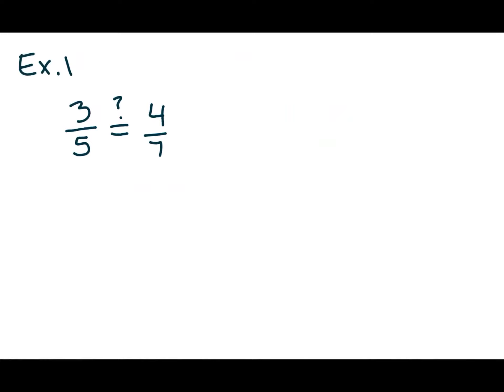Alright, let's look at example 1. The example says, is 3 fifths and 4 sevenths equivalent fractions? Well, we're going to check by cross multiplying. So we're going to check 3 times 7 and we're going to check 4 times 5 to see if they are equal. 4 times 5 is 20, and 3 times 7 is 21. So these are not equivalent fractions.